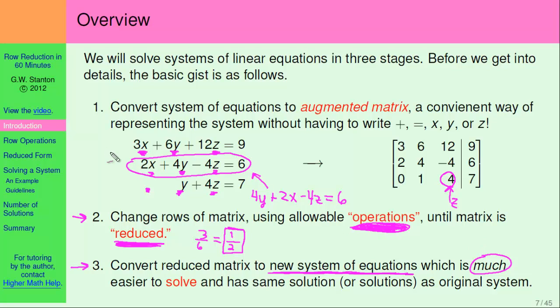So just to summarize, first step, convert to a matrix. Second, you get the matrix into reduced form. And then the third step, you convert back to a system of equations, which will be much easier to solve. And then your answer will actually be the answer to the original system.